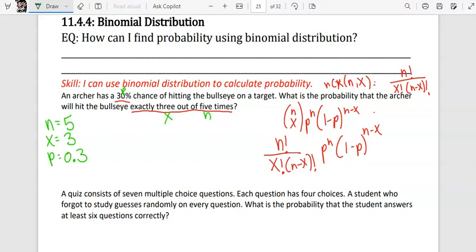So the main thing to do here is to identify the values and plug it into the formula. Once you do that, you can put it into the calculator. So 5 factorial over 3 factorial times 5 minus 3 factorial times 0.3 to the 3rd power times 1 minus 0.3 to the 5 minus 3 power.